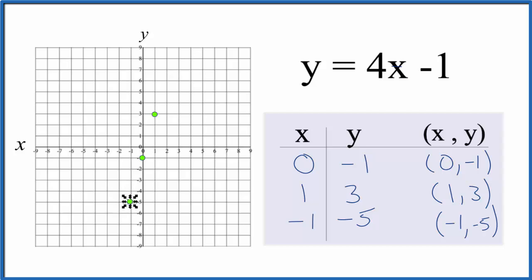And you can see these all line up. We could have done it with two points, but it's good to have three points to make sure you do the first part correctly. Let's put a line through this. And this is the graph for y equals 4x minus 1. Let's put some arrows here to show it goes to infinity, and then we can check our work with the slope-intercept formula.